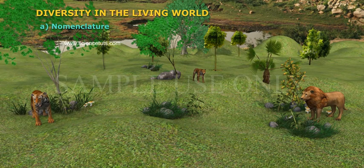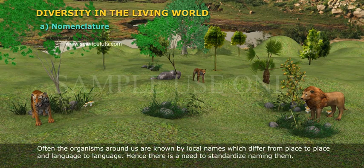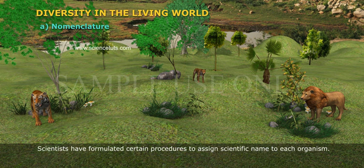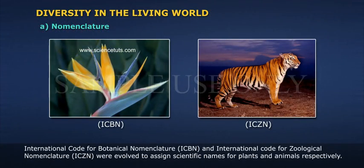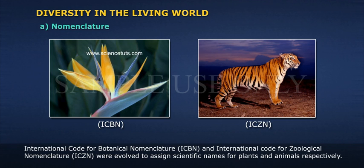Nomenclature: Often, the organisms around us are known by local names which differ from place to place and language to language. Hence, there is a need to standardize naming them. Scientists have formulated certain procedures to assign scientific names to each organism. International Code for Botanical Nomenclature and International Code for Zoological Nomenclature were evolved to assign scientific names for plants and animals respectively.